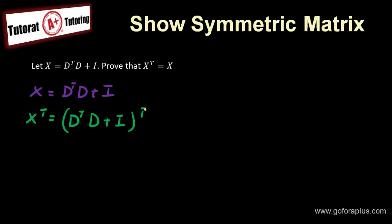Now I'm applying the transpose into the equation. With a plus or minus, the transpose is just applying to each term. So this is going to be dtd transpose plus i transpose.